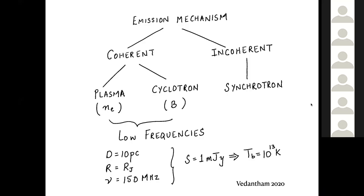Let me set the scene starting from basic physics — specifically the emission mechanism. When we talk of radio emission from stars and planets, you can have coherent or incoherent emission. At low frequencies, incoherent emission is not practically important. If you look at a milijansky source at 10 parsecs — roughly Jupiter's size at 150 MHz — the brightness temperature is 10^13 K, so the sensitivities we're reaching rule out incoherent emission, which greatly simplifies interpretation.